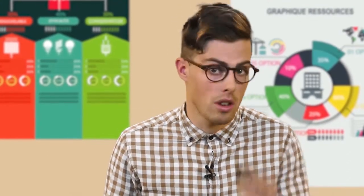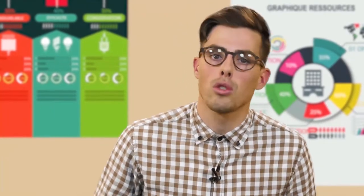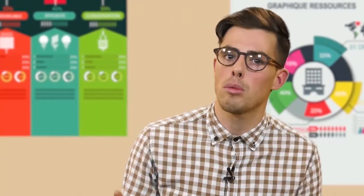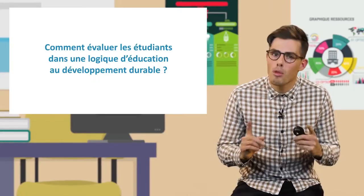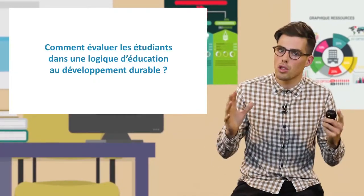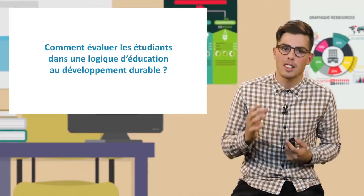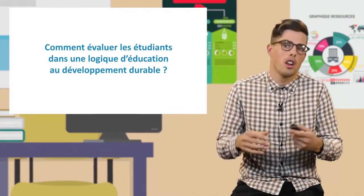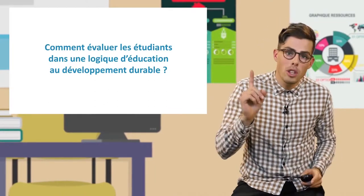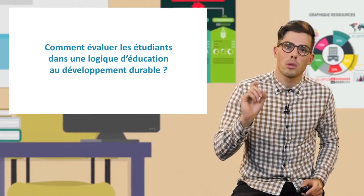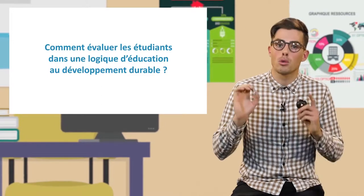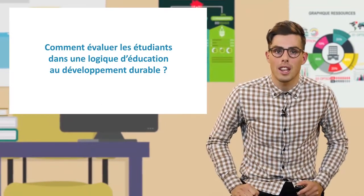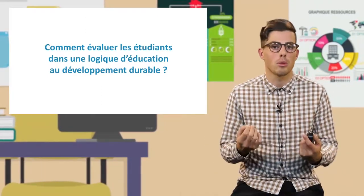Comment ça marche ? Je donne à chaque étudiant un cliqueur, une télécommande, et je leur projette sur grand écran un questionnaire à choix multiple d'une trentaine de questions qui dure environ une heure. Pour valider l'examen, la classe dans son ensemble doit atteindre un certain pourcentage de réponses collectives correctes, disons 75%. Pour qu'une réponse collective soit considérée correcte, il faut que plus de 75% de la classe ait individuellement choisi la bonne réponse.